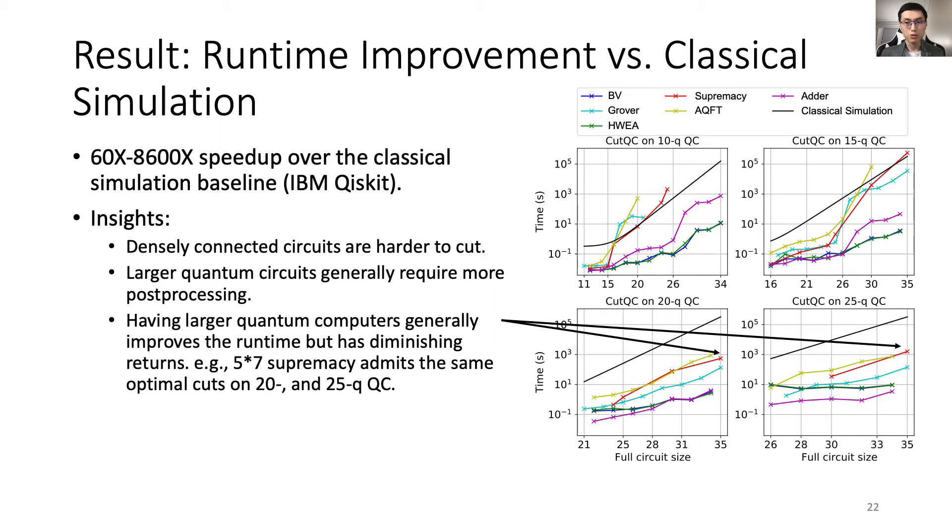Our first set of results run larger quantum circuits on 10, 15, 20, and 25 qubit devices. On average, CutQC achieves 60x to 8600x speedup over the classical simulation baseline. All of our circuits are larger than the quantum device backends, which means the small NISQ platforms could not have run these circuits at all. Our experiments show that densely connected circuits are harder to cut, larger quantum circuits generally require more classical post-processing, and having larger quantum computers generally improves the runtime but has a diminishing return. For example, the 5x7 supremacy circuit admits the same optimal cuts on either a 20 or 25 qubit device.